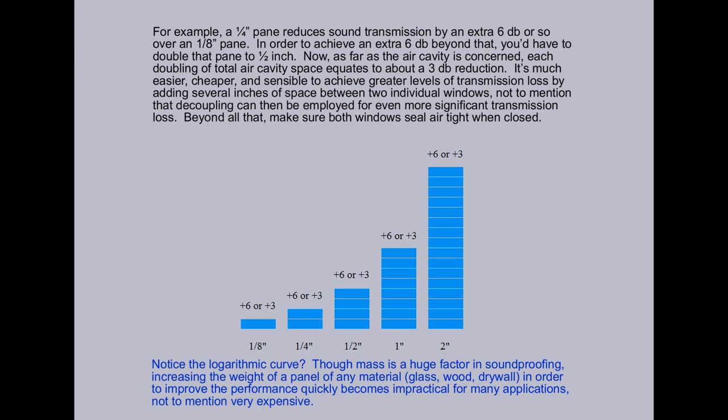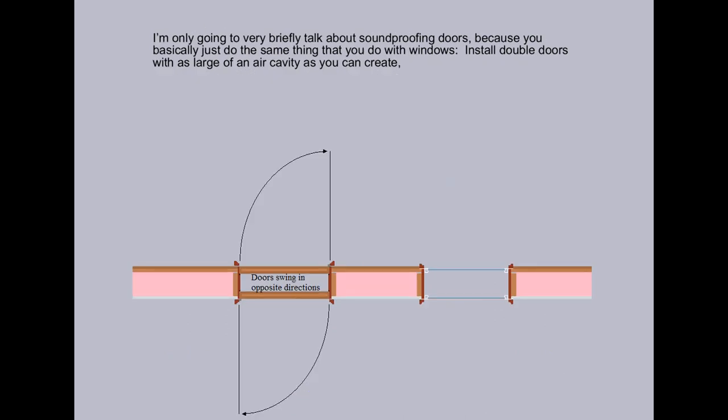Beyond all that, make sure both windows seal air tight when closed. I'm only going to briefly talk about soundproofing doors, because you basically just do the same thing that you do with windows. Install double doors with as large of an air cavity as you can create.